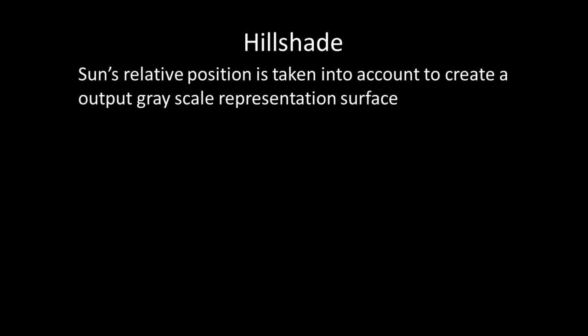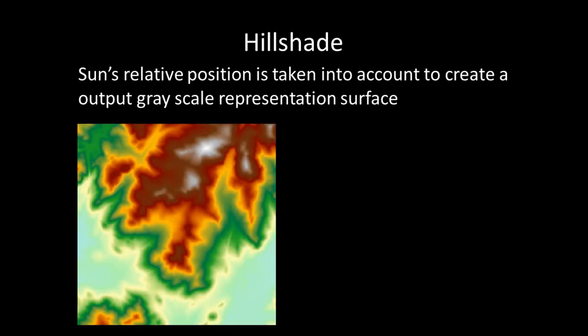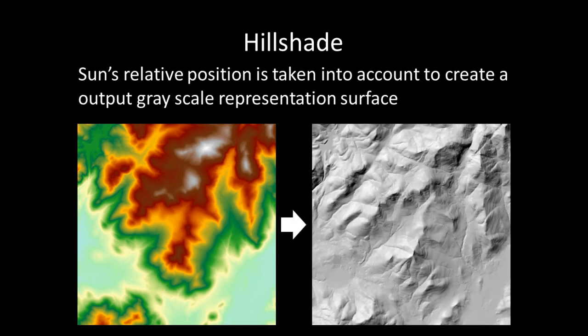Hillshade is where the sun's relative position is taken into account to create an output grayscale representation surface. You can think of the hillshade like shining a light over a topographic surface — the altitude and azimuth, or compass angle, of the light source will determine how the shadowing is created. Using a previous elevation surface, running the hillshade command with a default azimuth of 315 degrees and an altitude of 45 degrees from the horizon creates darker areas under mountainous peaks due to shadowing.